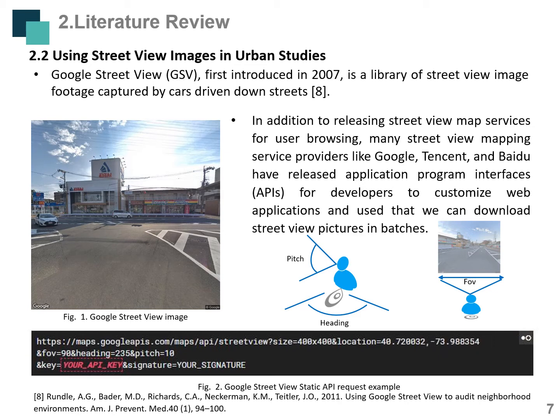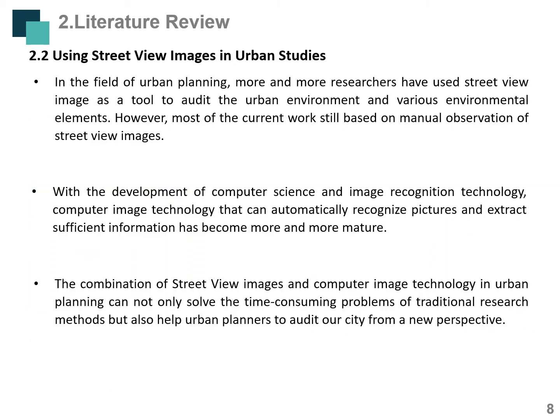The picture shown is an example of Google Street View's static API. In the field of urban planning, more and more researchers have used street-view images as a tool to audit the urban environment and various environmental elements. However, most current work is still based on manual observation of street-view images. With the development of computer science and image recognition technology, computer vision technology that can automatically recognize pictures and extract sufficient information has become increasingly mature, helping urban planners audit cities from a new perspective.